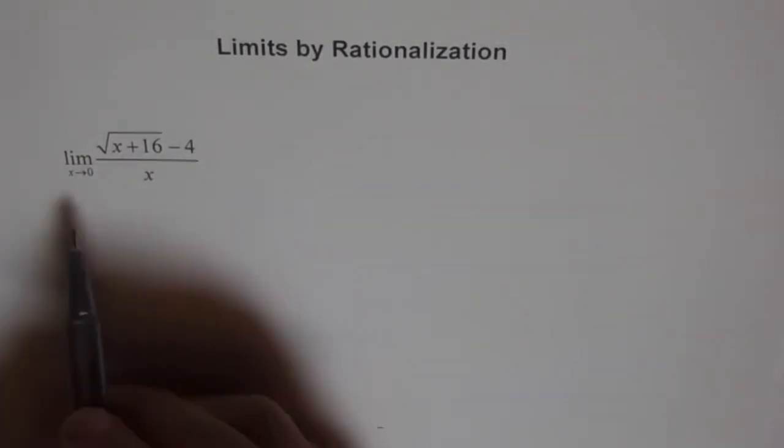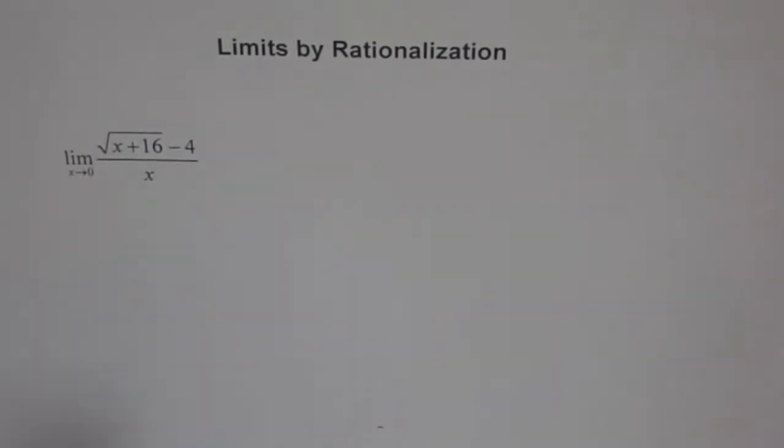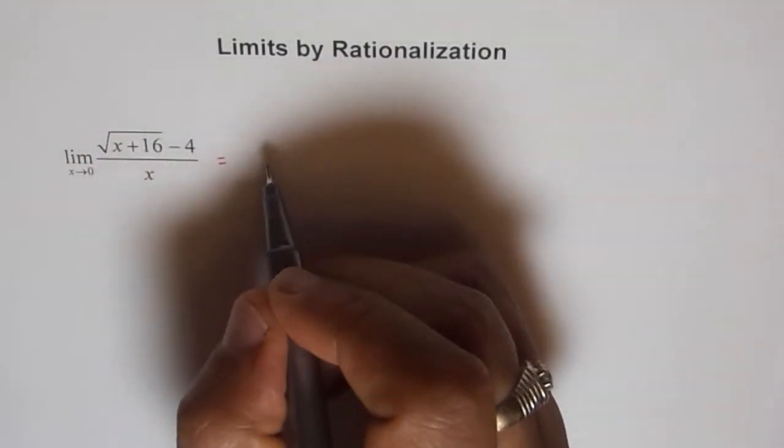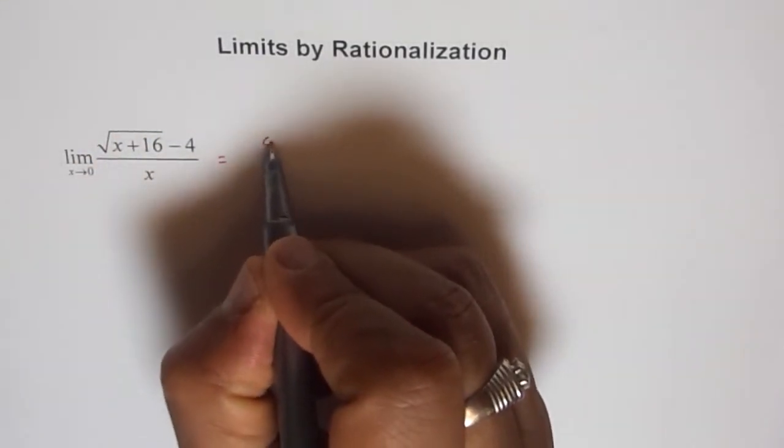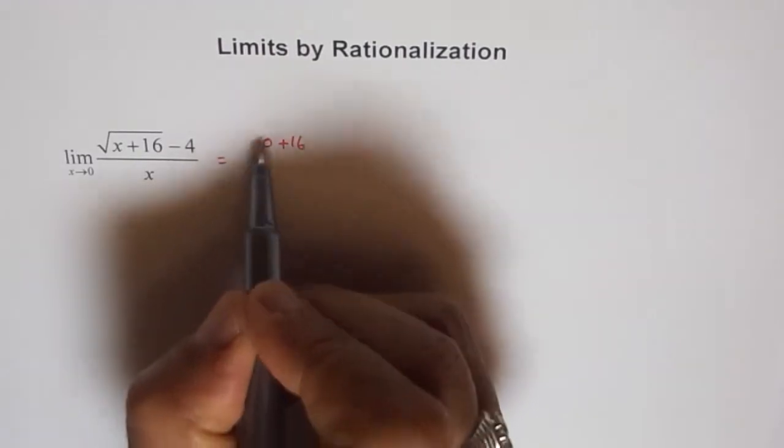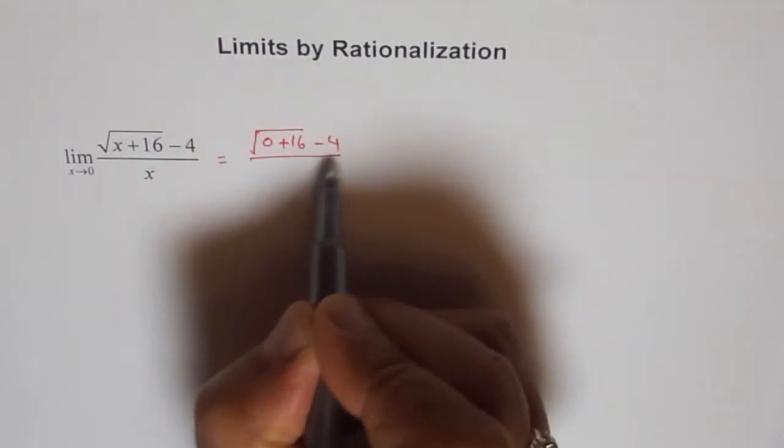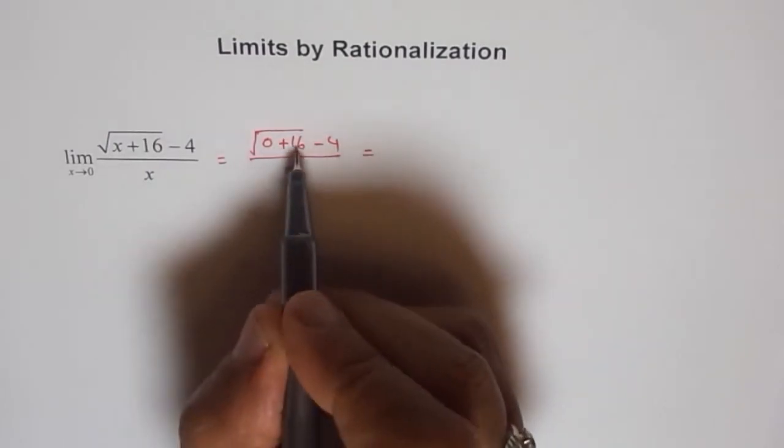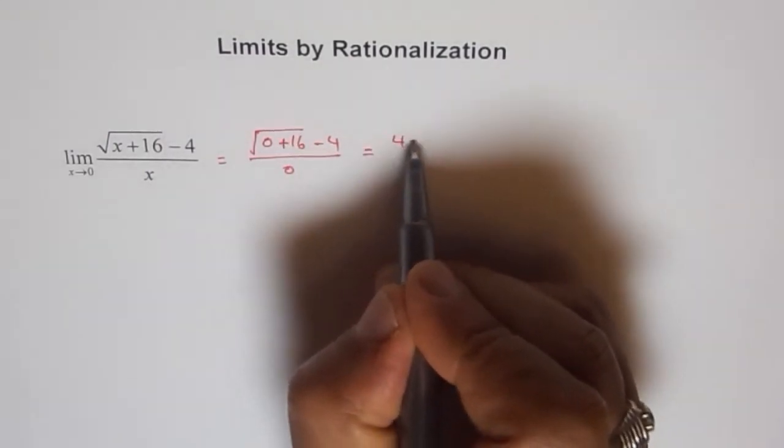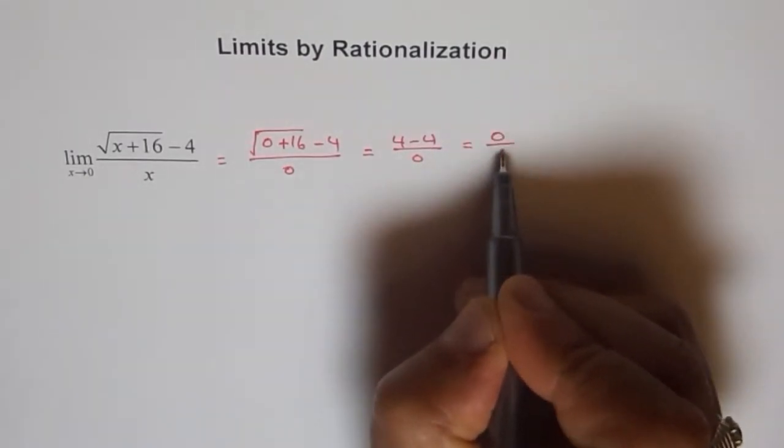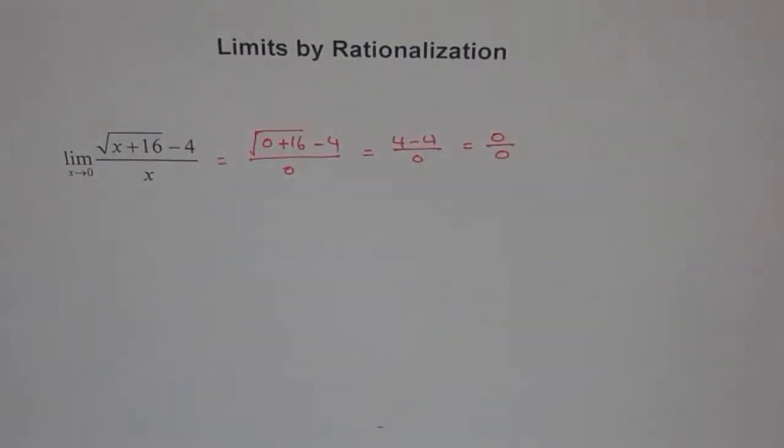Now here, if you substitute 0, then what happens? Let me do it in red. So, if I substitute 0 in this, I get 0 plus 16, square root minus 4 over 0. And square root of 16 is 4, so I get 4 minus 4 over 0, which is 0 over 0. So, 0 over 0 is meaningless.